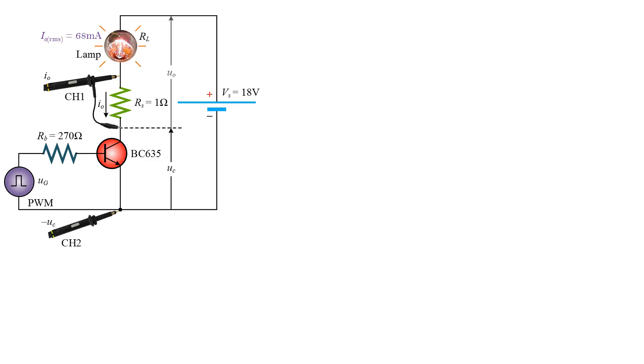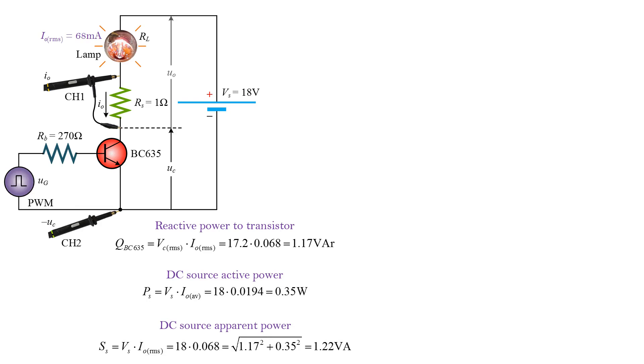The DC source supplies the reactive power to the transistor and the active power to the load. The apparent power is equal to 1.22 volt ampere. The efficiency is nearly 100%.